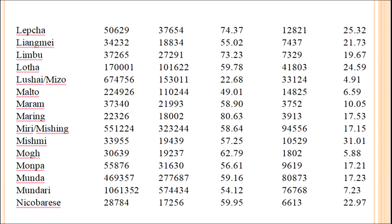Examples from various states include: Lepcha from Sikkim, Liangmai from Manipur, Limbu from Sikkim, Lotha from Nagaland, Mizo from Mizoram, Malto from Bihar and Jharkhand, Maram from Manipur, Maring from Nagaland and Manipur, Miri and Mishing from Arunachal Pradesh, and so on.